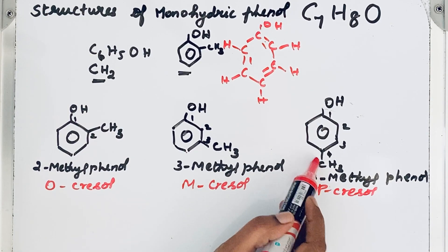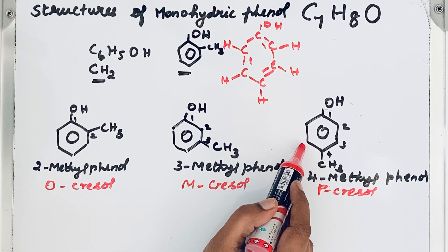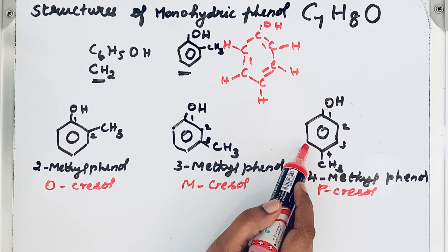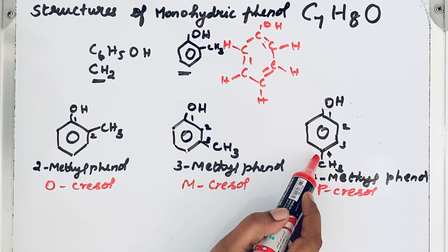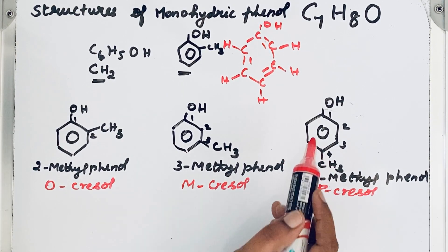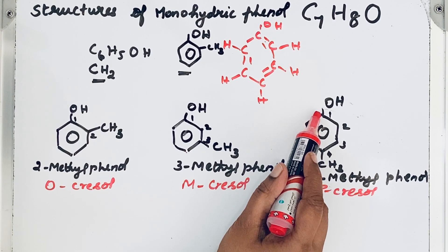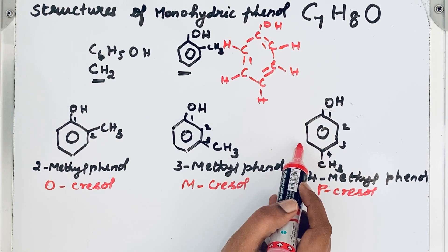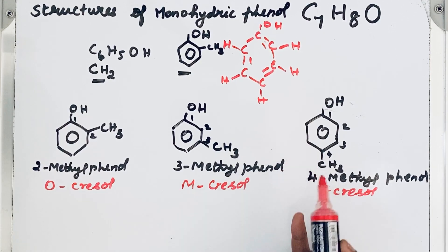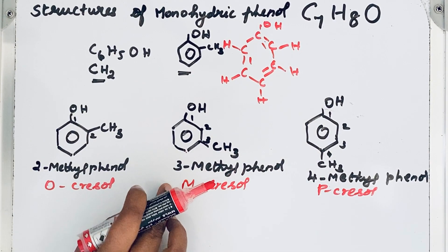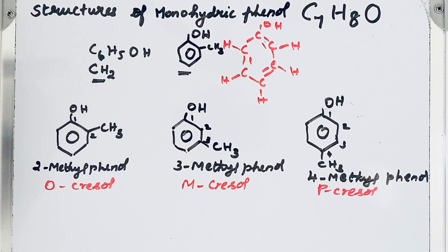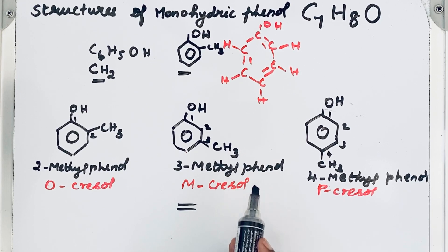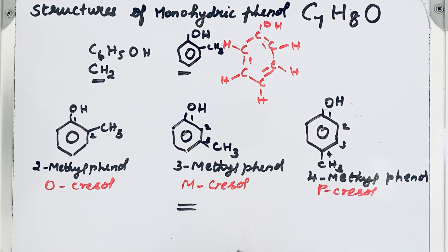Can we move the CH3 group to the fifth carbon? Yes we can move, but if we move CH3 group to the fifth position, when we give the numbering we start from here one, two, three. Why? Because substituents also should get the lowest number. So then it will repeat the same structure, meta-cresol, 3-methylphenol only. So these are the three possible structures of C7H8O monohydric phenols. Thanks for watching.